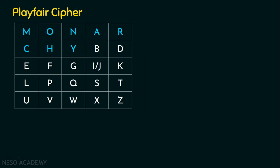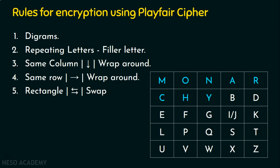In the last lecture, we saw how to insert the keyword into the Playfair cipher five-by-five matrix. After filling the keyword, we insert the remaining alphabets not present in the keyword. Using this five-by-five matrix filled with the keyword and remaining alphabets, we are going to generate the ciphertext.